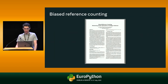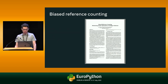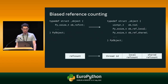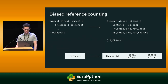Biased reference counting is an algorithm created to address the overhead of atomic reference counting, created by Jiho Choi, Thomas Schüle, and Joseph Turian at the University of Illinois at Urbana-Champaign, and published in 2018. It's based on the observation that most objects are only accessed by a single thread, even in a multi-threaded environment. Biased reference counting splits the reference count field into two parts, storing also the ID of the thread that created the object. The first part stores the local reference count, modified by the creating thread using plain non-atomic operations. The second field stores the shared reference count, modified by other threads using atomic instructions. The true reference count is the sum of these two fields.